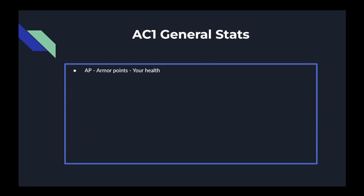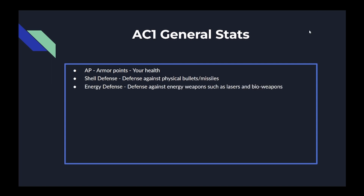So the general stats for Armored Core that are on multiple parts are AP or Armor Points, which is your health. This is on your head, core, arms, and legs. Then there is the shell defense stat, which is your physical defense against bullets, missiles, explosions, or anything of the like that is a physical hit. Energy defense is your defense against energy weapons, such as lasers, plasma, and for some reason bio weapons.